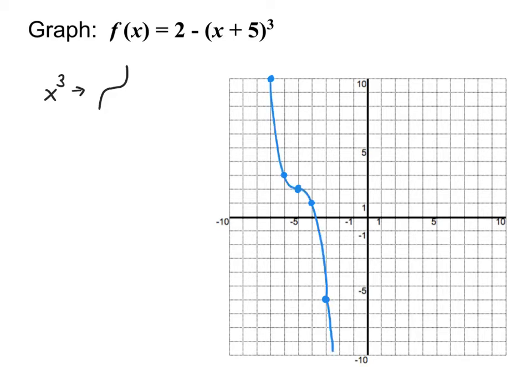Just like before, if we're doing this on the computer, start by plotting that first point, then you only need to plot one other point to draw the rest of the curve. You choose which shape you want first, then plot your starting point, and one more point tells it where to go from there.